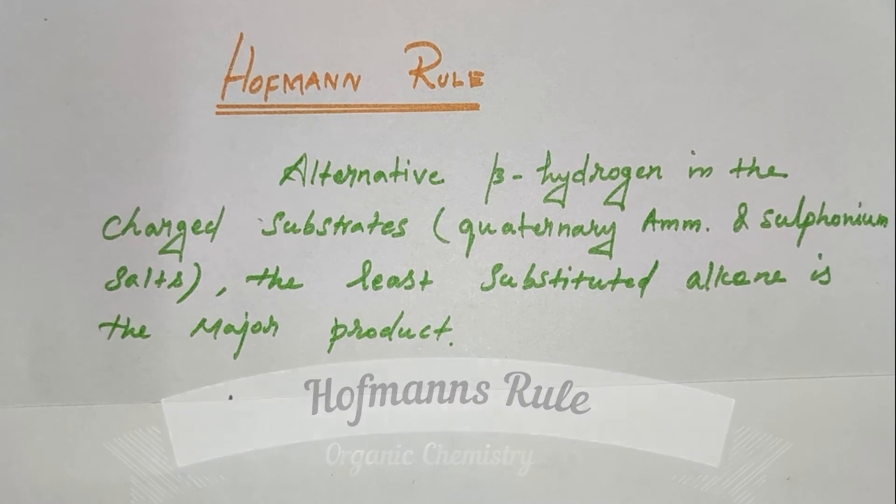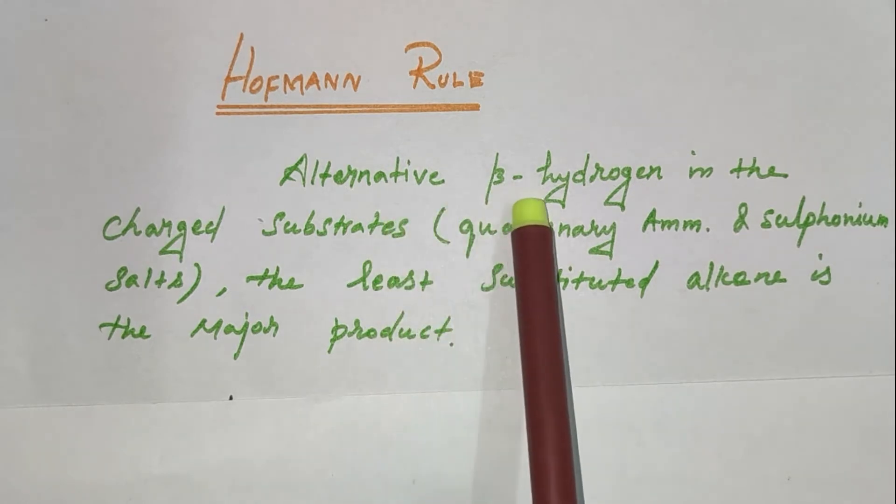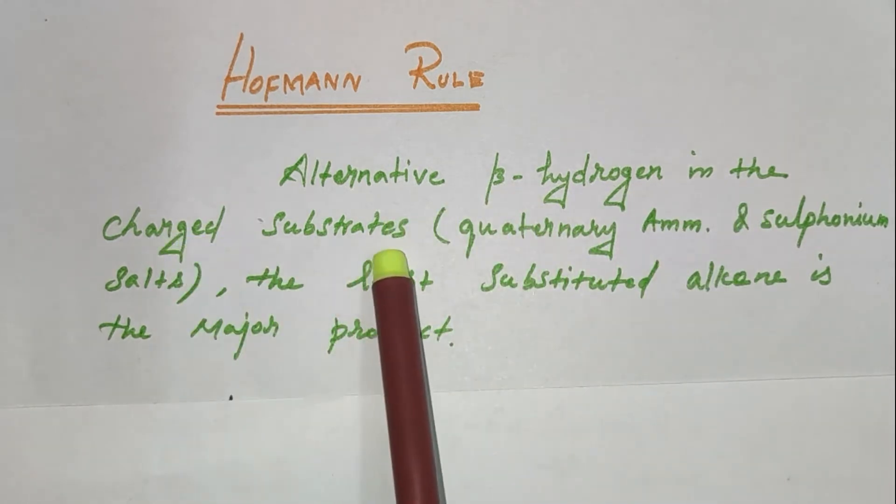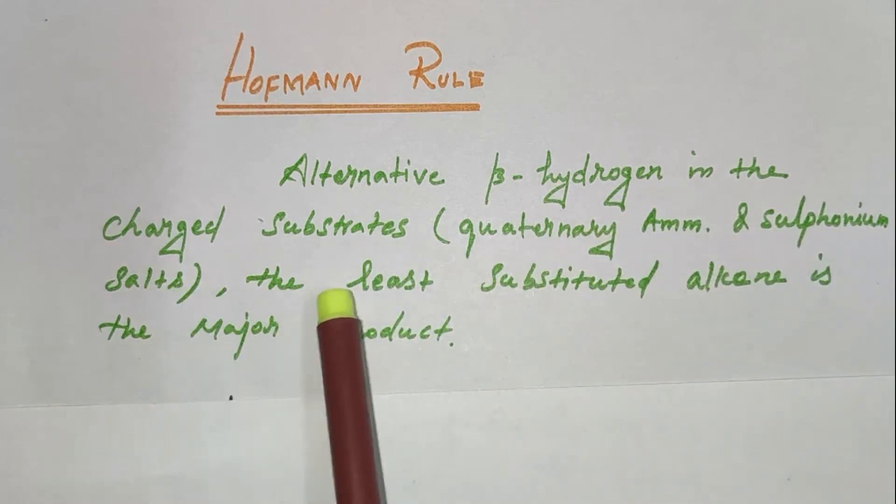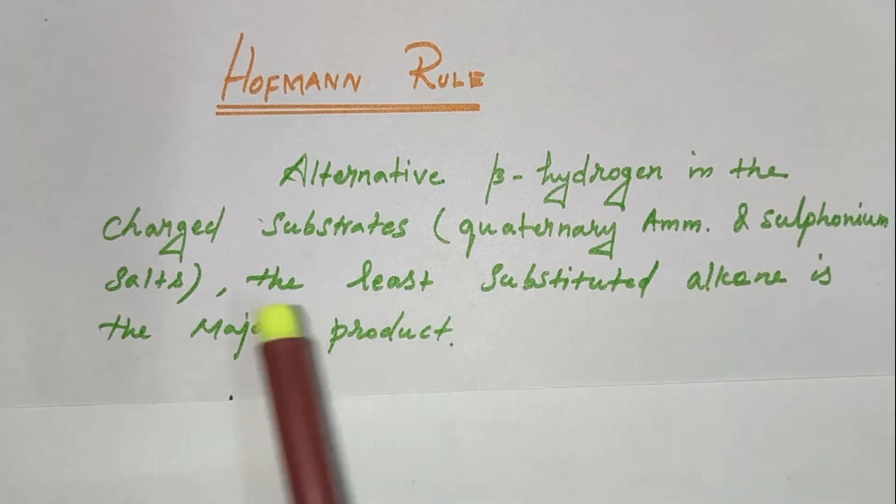Today in this video we will discuss the topic of Hofmann rule. In the previous video we discussed the Saytzeff rule. When alternative beta hydrogens exist in charged substrates like quaternary ammonium and sulfonium salts, the least substituted alkene is the major product.